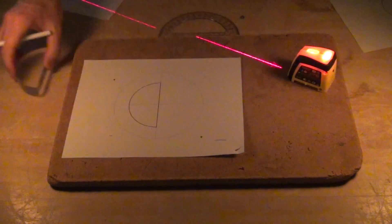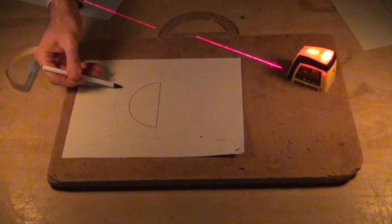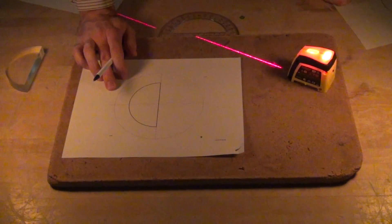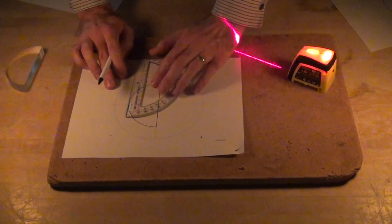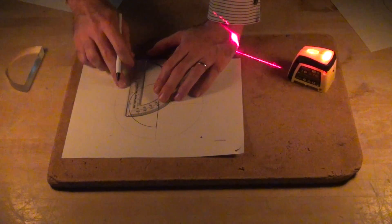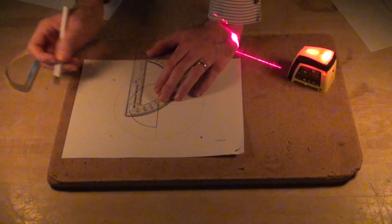Now, once you have those points, you actually are interested in the sine of the angle, to look at Snell's Law. And the easiest way to do that is actually just measure the height from the horizontal.